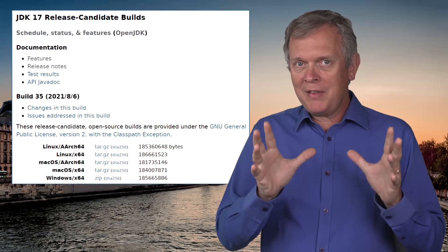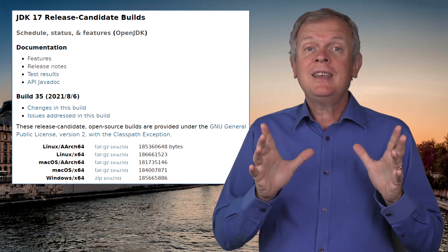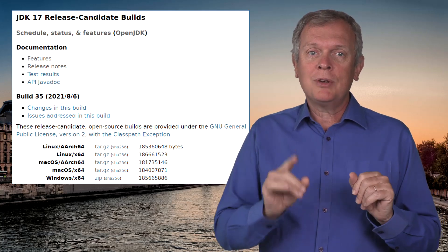First and foremost, the first release candidate of JDK 17 is here. Remember that the final release of JDK 17 is due next September 14th. You can grab it on the URL or click on the link down below. We already covered the list of features on the previous newscast, so I'm not going to go through them all. I just would like to shed some light on three of my favorites.